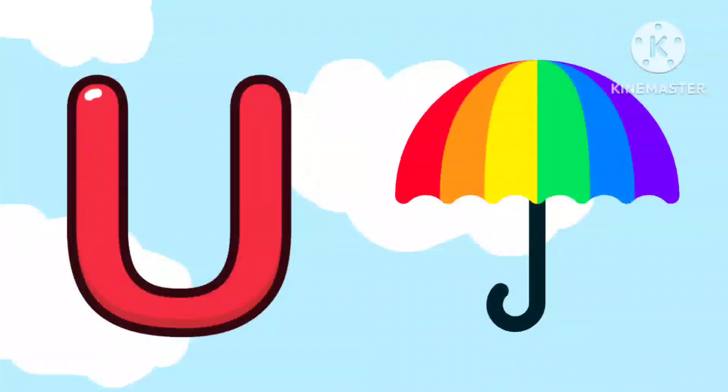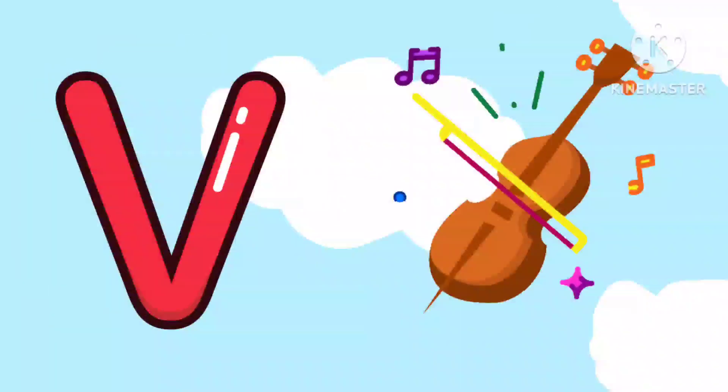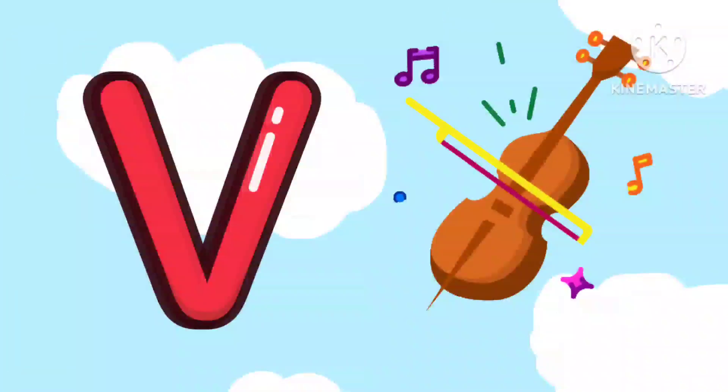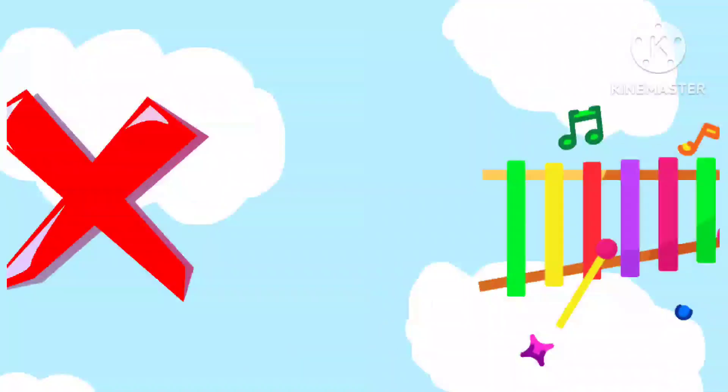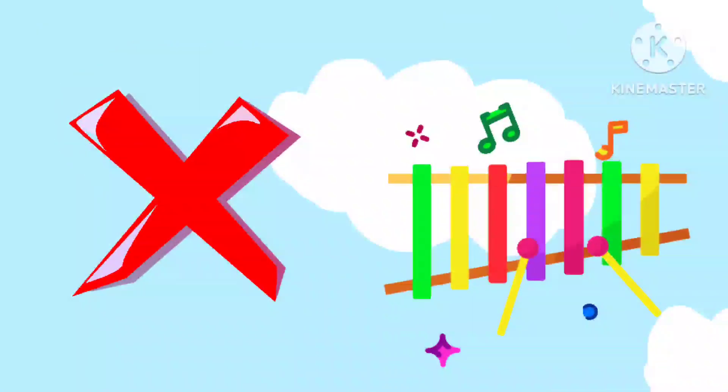U is for Umbrella, U, U, Umbrella. V is for Violin, V, V, Violin. W is for Watch, W, W, Watch. X is for Xylophone, X, X, Xylophone.